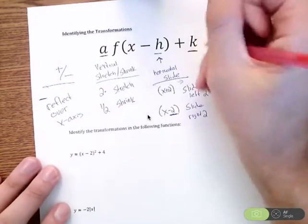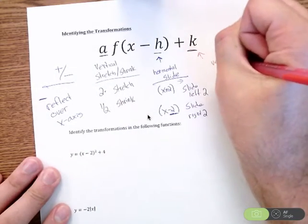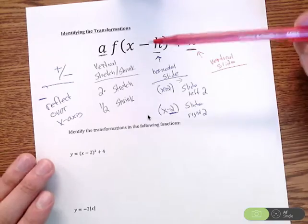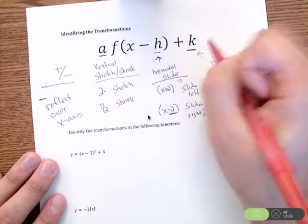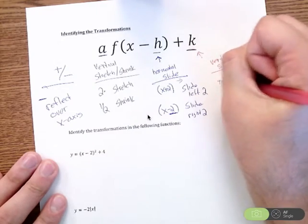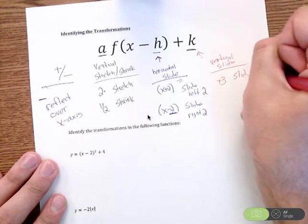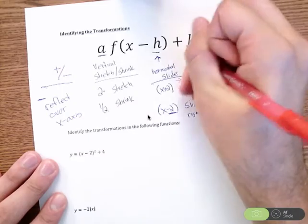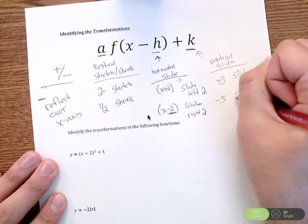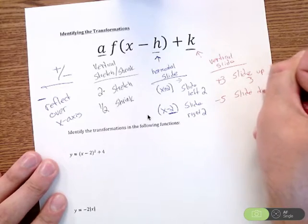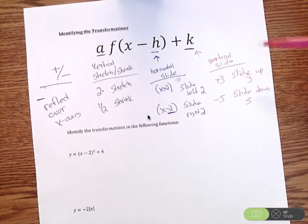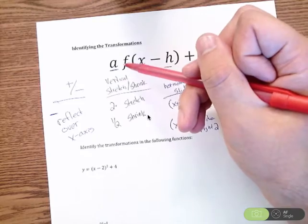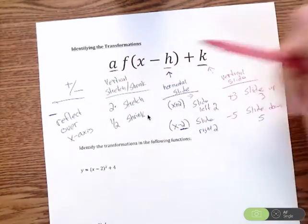The last transformation is K, and that is a vertical slide. So that is going to slide things up and down, slide your entire graph up or slide it all down. This one's pretty easy because you could just take it as is, meaning if you have a plus 3 out there, that means everything is going to slide up 3. Where if in the back end, in place of K, you saw a minus 5, that's going to slide everything down 5. So again, K slides everything up and down. H moves everything left and right. And A, that's going to stretch or shrink things vertically. And you have to look out for those negative signs that's going to reflect it.